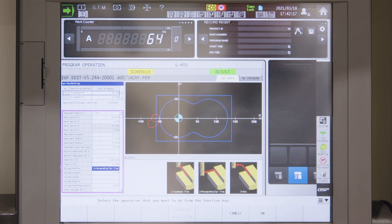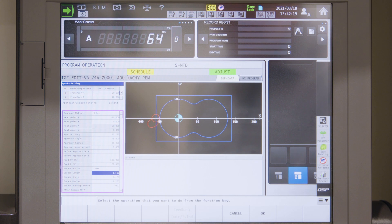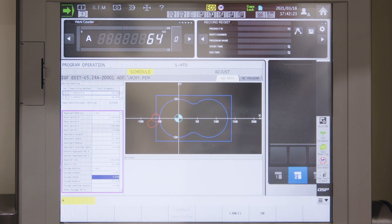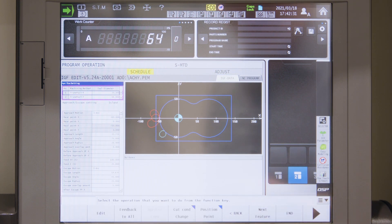My escape motion will also be a circular motion. The same again with 25 millimeter radius and in this case I will use 45 degrees. And I would like to have one millimeter overlap between entering and escaping from the material to have no mark on the workpiece.